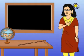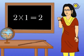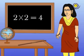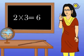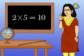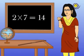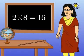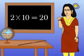Multiplication table of 2. 1 two is 2. 2 twos are 4. 3 twos are 6. 4 twos are 8. 5 twos are 10. 6 twos are 12. 7 twos are 14. 8 twos are 16. 9 twos are 18. And 10 twos are 20.